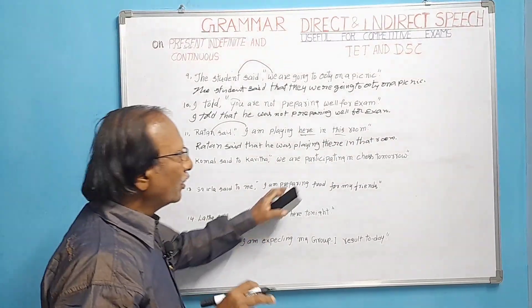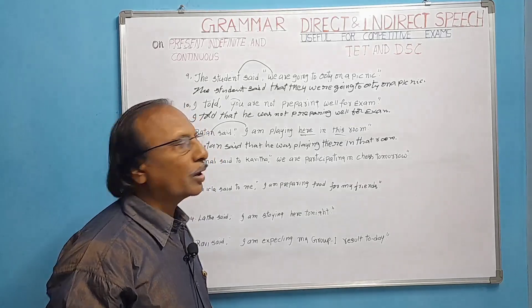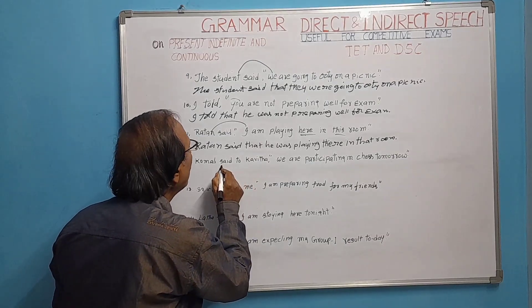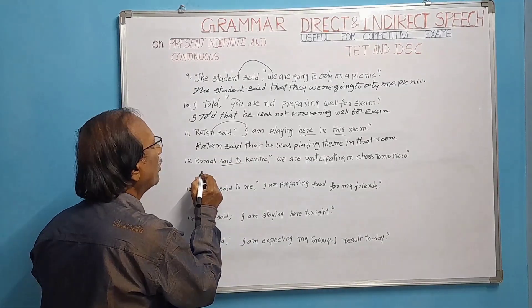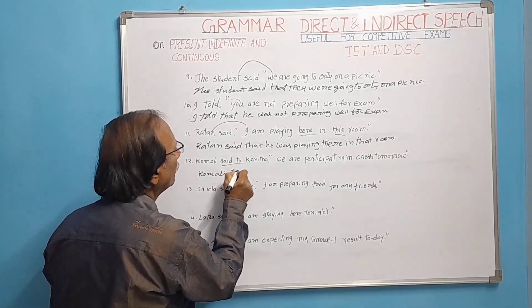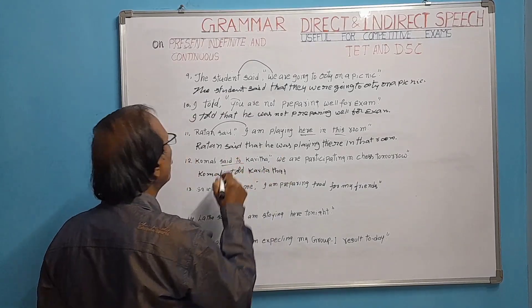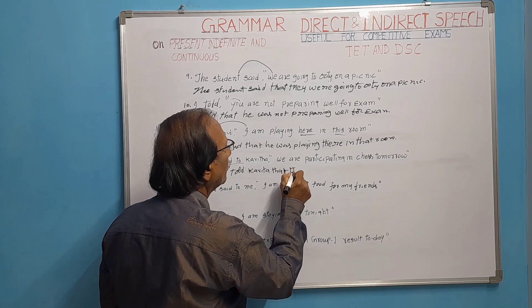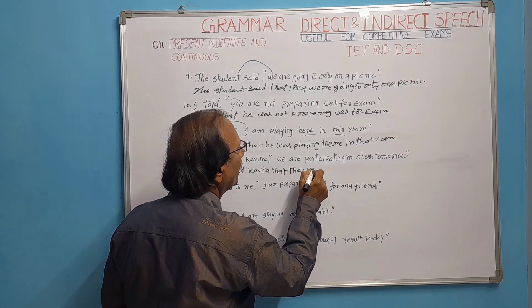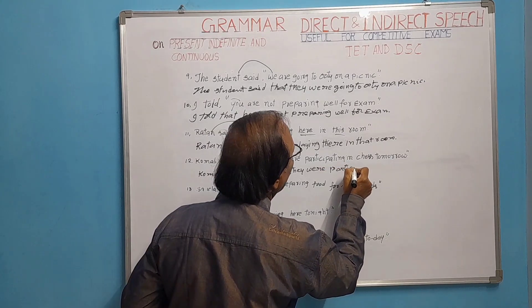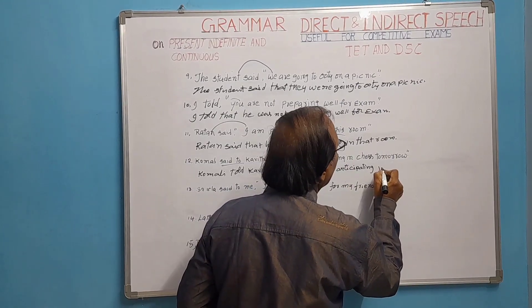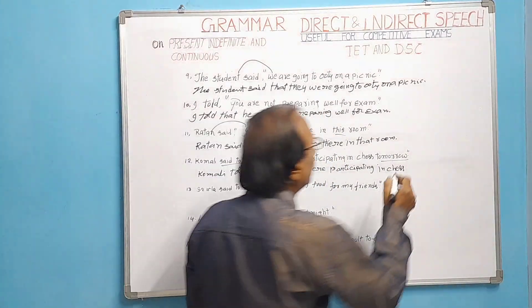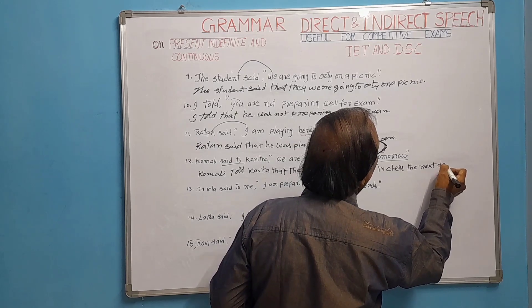Kamali said to Kavitha, 'We are participating in chess tomorrow.' The reported verb is 'said to,' which is a statement, so it becomes 'told': Kamali told Kavitha. We add 'that.' 'We' refers to Kamali and her team, so it becomes third person plural 'they.' Present continuous changes to past continuous 'were participating.' 'Tomorrow' changes to 'the next day.' Result: Kamali told Kavitha that they were participating in chess the next day.